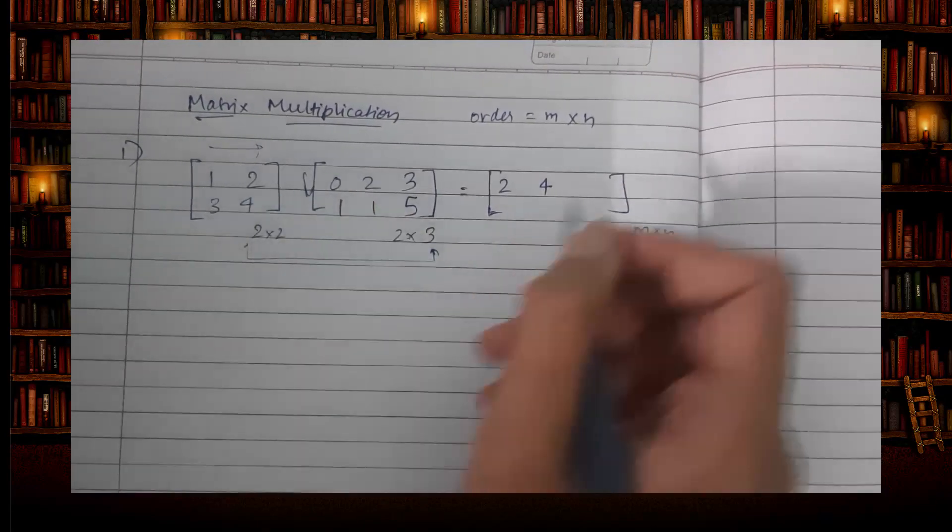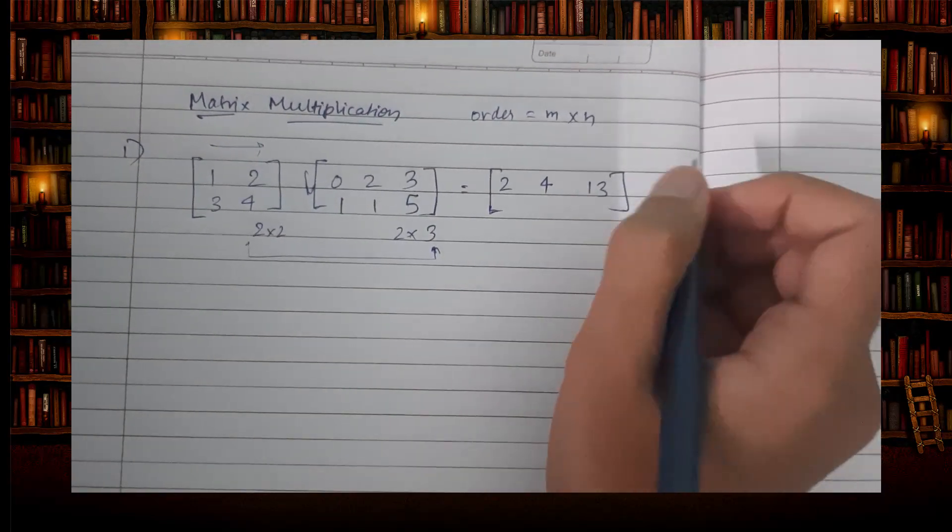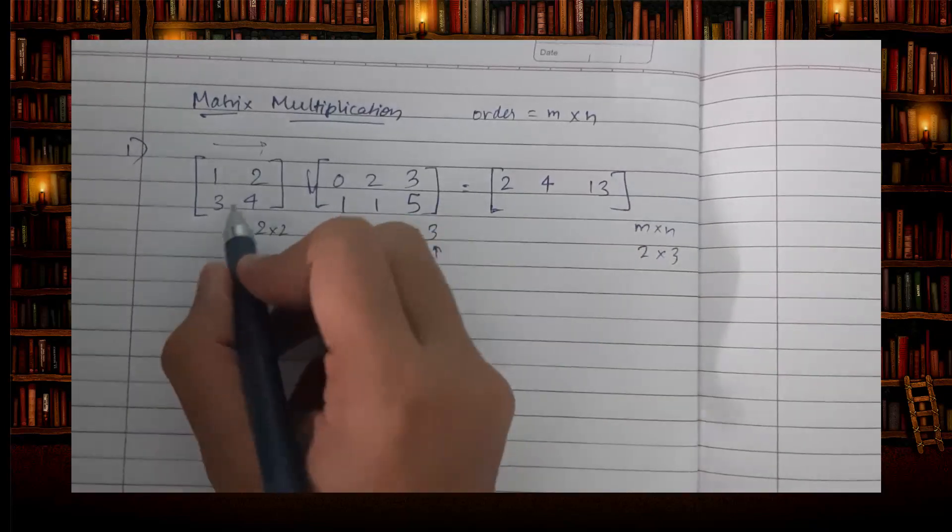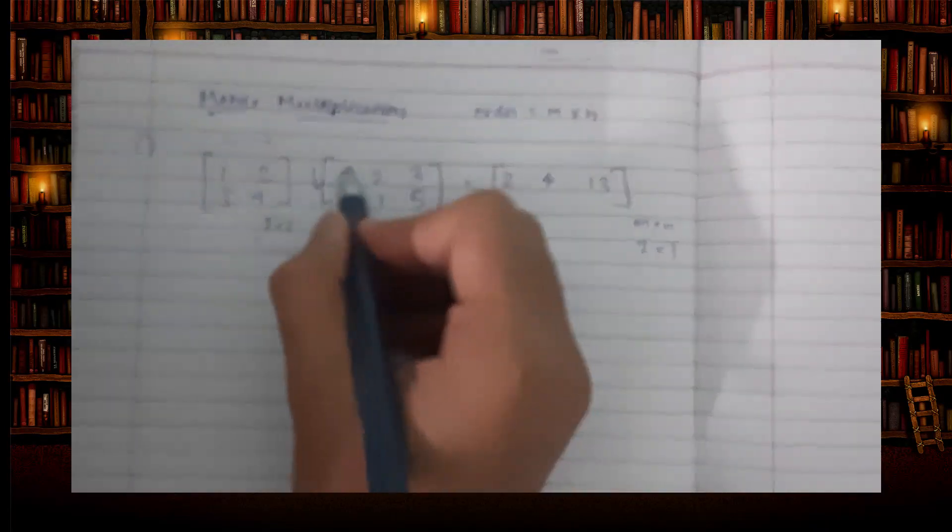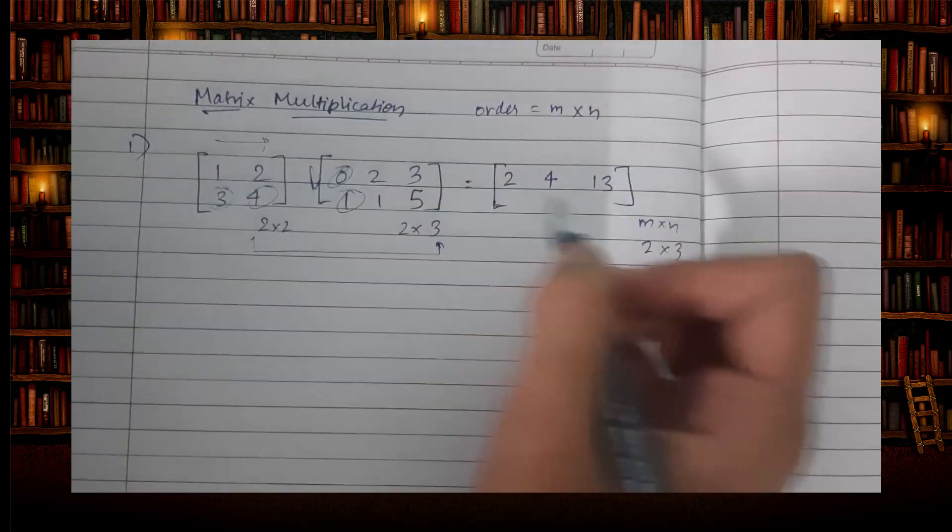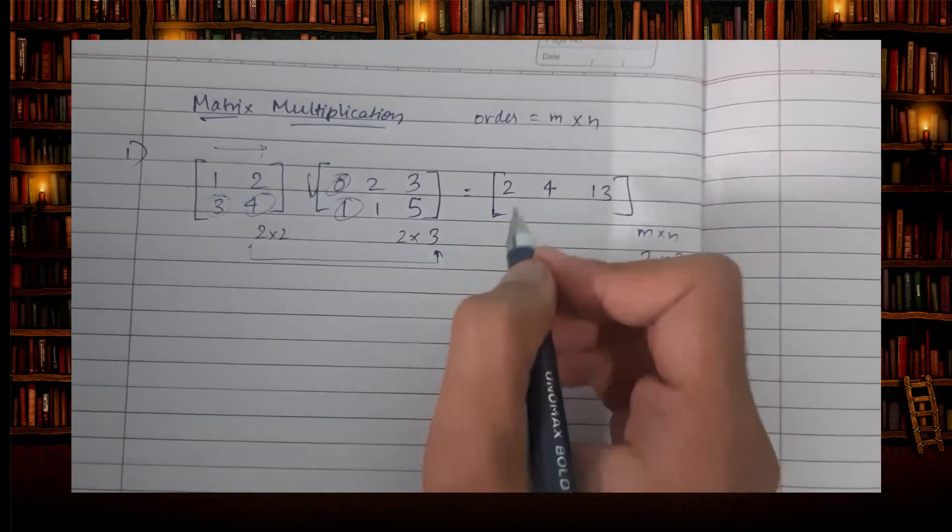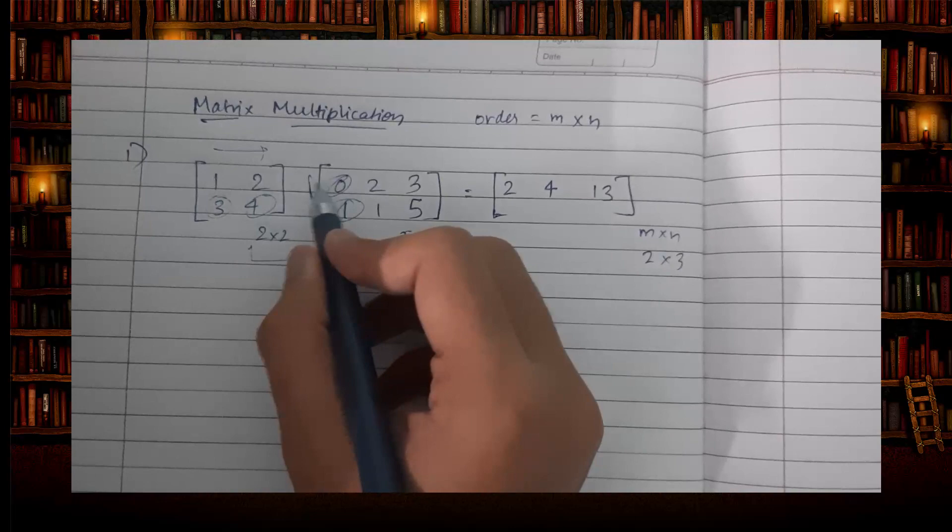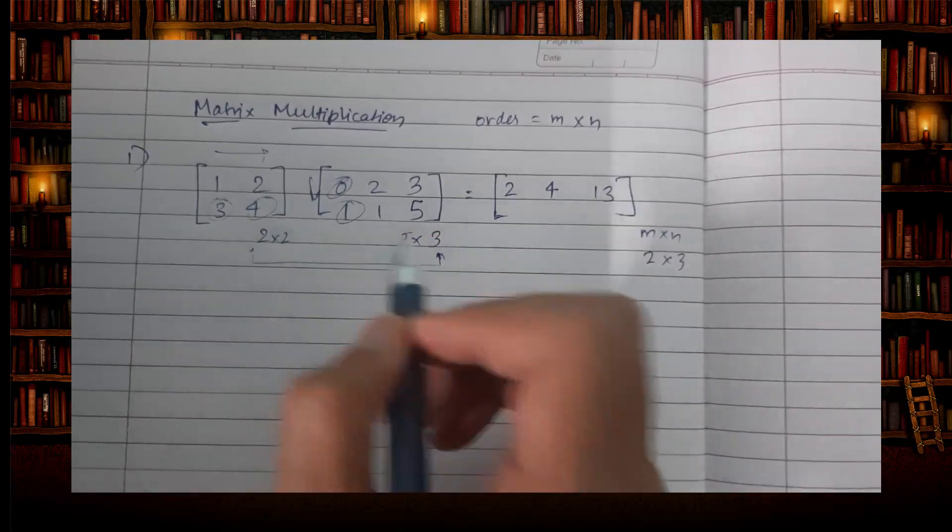Over here again, this row into this column, you should add it, that's all. So 3 into 0 is 0, plus 4 into 1 is 4.